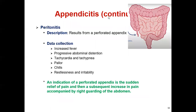Appendicitis can lead to peritonitis if untreated. Peritonitis results from a perforated appendix, leading to inflammation of the peritoneum. Data collection findings include increased fever, progressive abdominal distension, tachycardia, tachypnea, pallor, chills, restlessness, and irritability. An indication of a perforated appendix is sudden relief of pain followed by a subsequent increase in pain accompanied by right-sided rigidity of the abdomen.